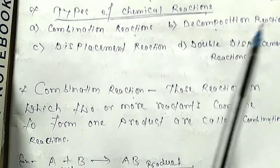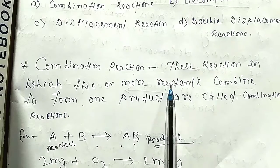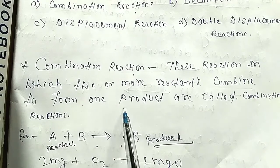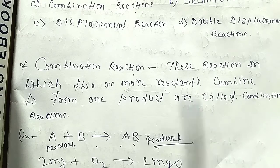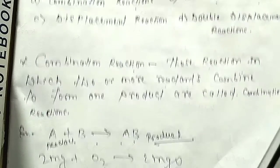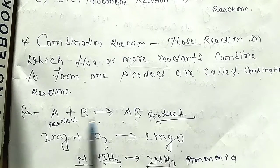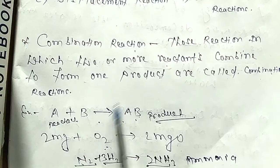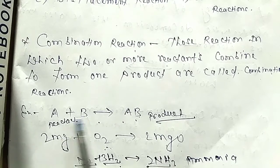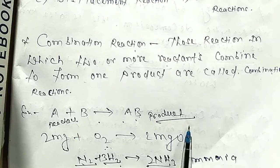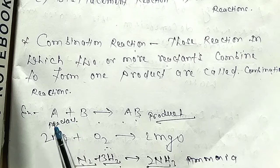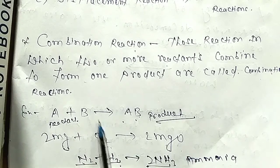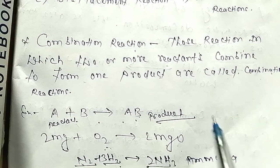I will discuss them one by one. First, the combination reaction: those reactions in which two or more reactants combine to form one product are called combination reactions. When A and B combine, A and B are reactants and AB is the product — a single product is produced.